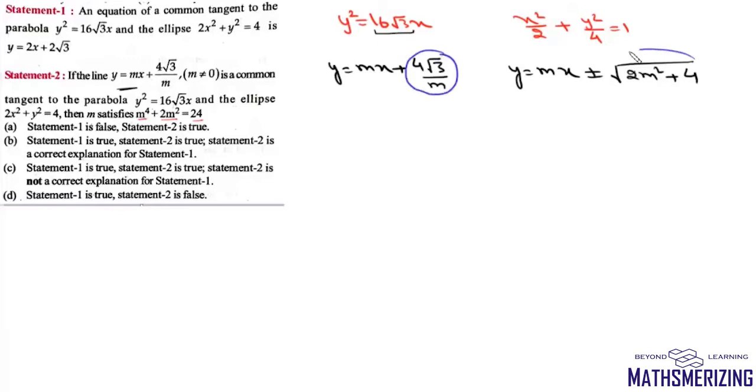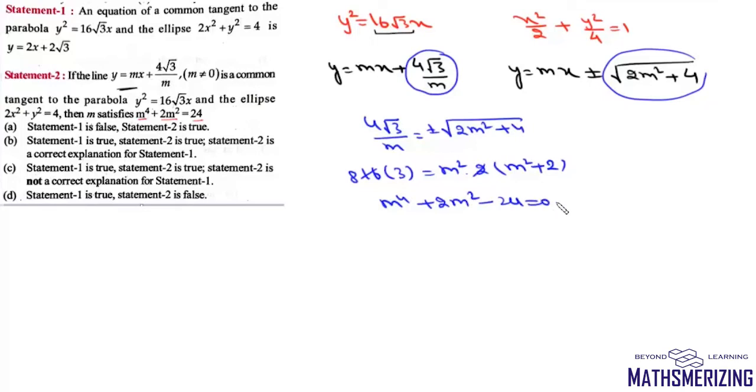So we'll compare the constant terms: 4√3/m = ±√(2m^2 + 4). Squaring both sides, 48/m^2 = 2m^2 + 4. Multiplying by m^2, we get 48 = 2m^4 + 4m^2. So we can write this as m^4 + 2m^2 - 24 = 0.